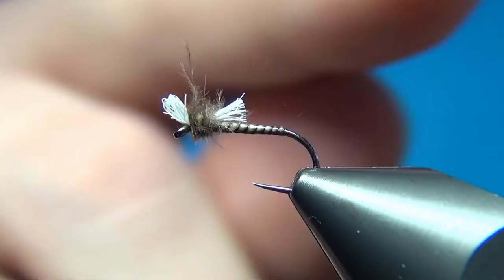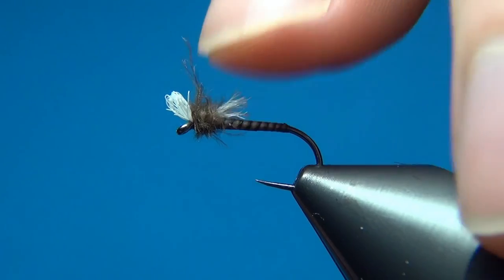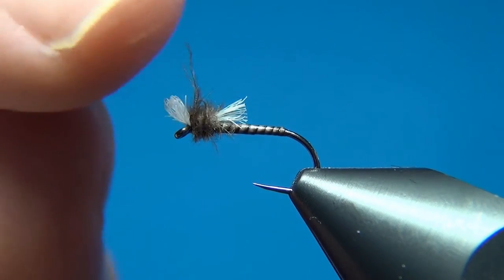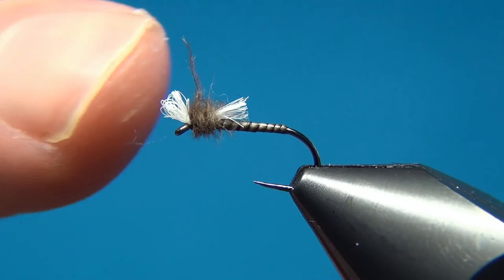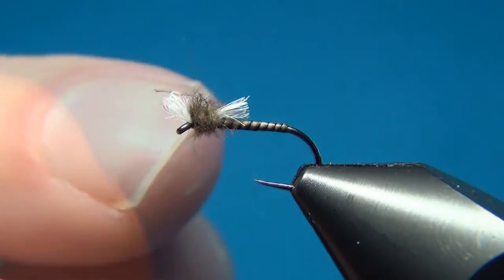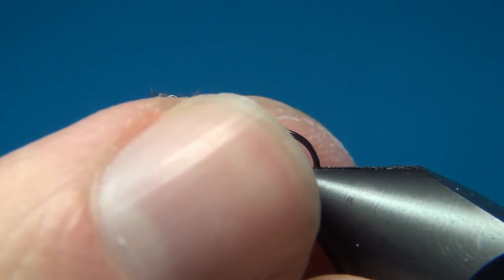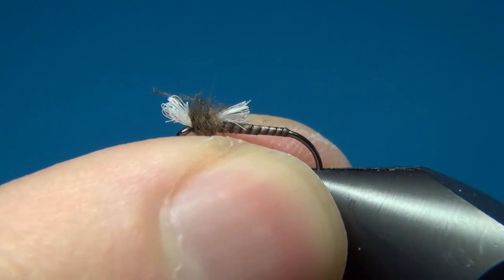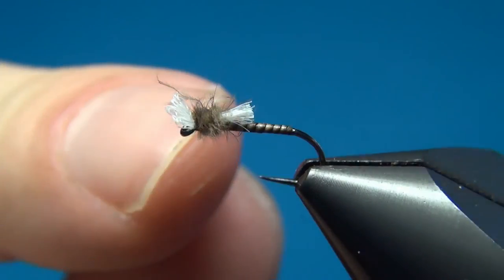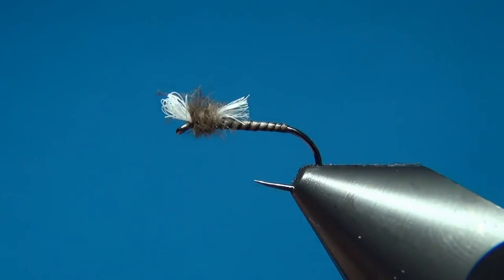So all these materials here will trap some air. And also this white here will stand out quite nicely and represent the gills on these midges. And this CDC dubbing here makes for a nice little thicker thorax than the body and also will help the fly float.